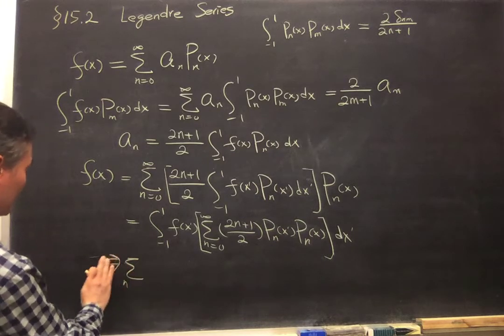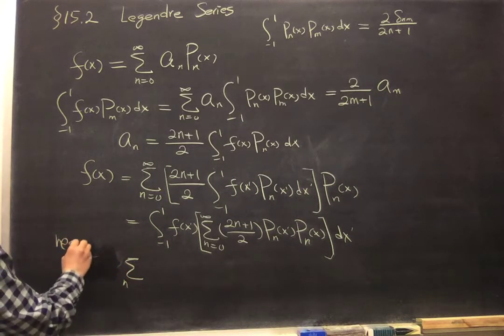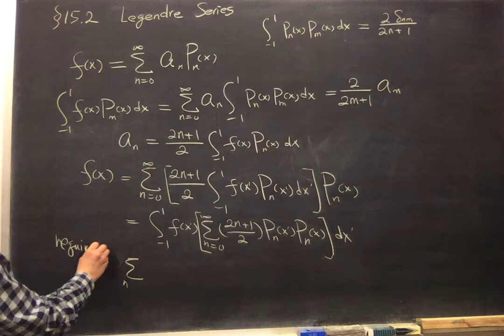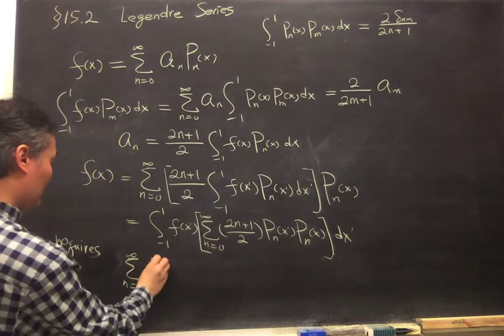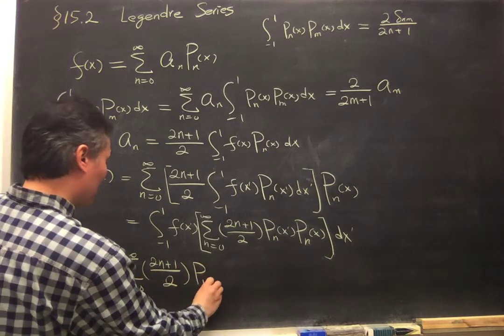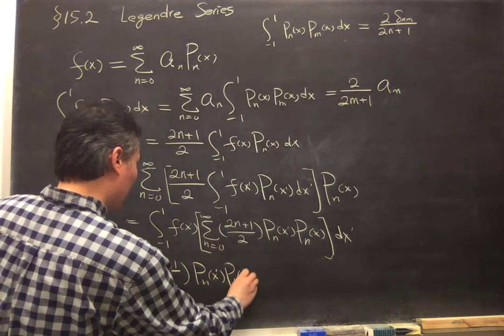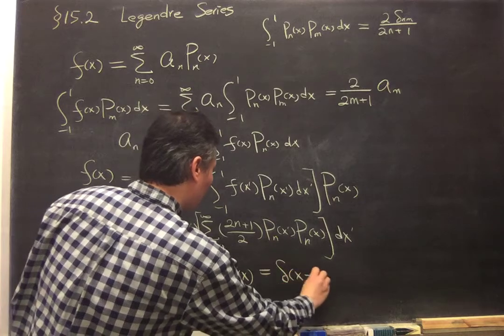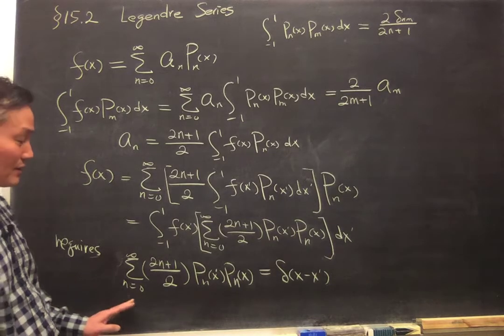So this is actually not implied, but required. This square bracket, 2n plus 1 over 2, P_n(x prime), P_n(x), equals to a delta function δ(x minus x prime). So that's an expression of the completeness condition.